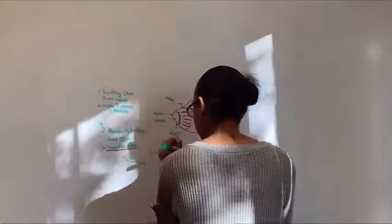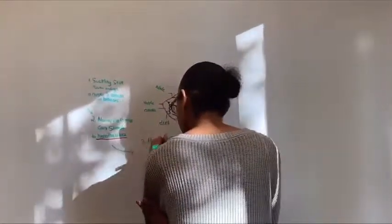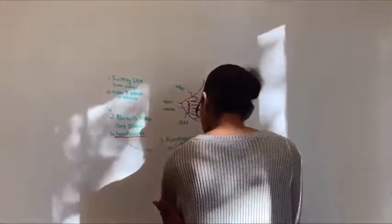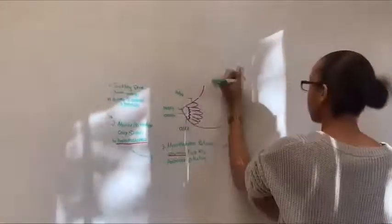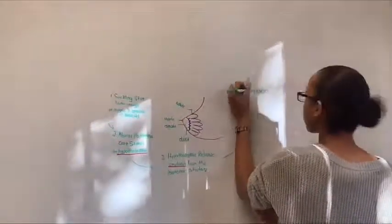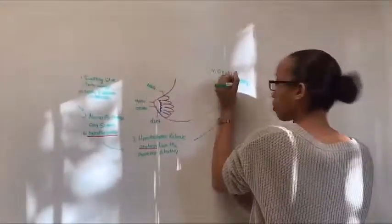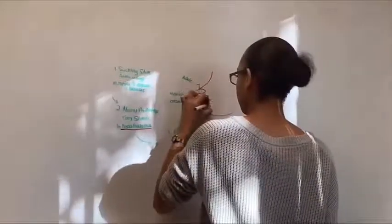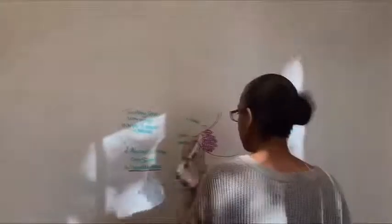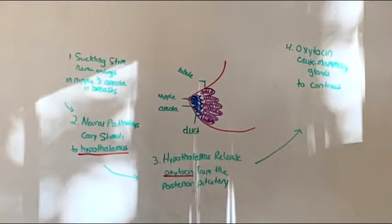After the placenta is gone, prolactin levels start to drop, so mechanical stimulation of nipples by suckling sends action potentials to the hypothalamus to release PRH. This results in a burst-like release of prolactin, which then stimulates milk production. The actual ejection of milk is called the let-down reflex, which is released from the alveoli of the mammary glands. Suckling stimulates the breast, which prompts the hypothalamus to release oxytocin from the posterior pituitary gland via positive feedback mechanisms. Both breasts will always eject milk. Even though one is being suckled, both of them will be leaking while lactating.